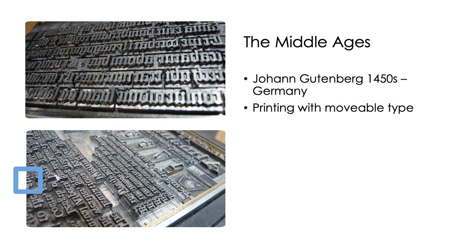If you look at the pictures on the left, people would carve out individual letters, characters, or words and then place them in an order to make up the sentence. Then they would put ink over the top and press the paper down onto it, thereby printing a page of text. This meant that for the first time it was possible to reproduce multiple copies of the same work.